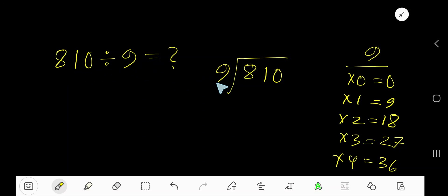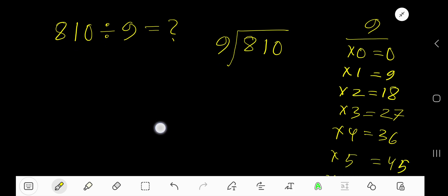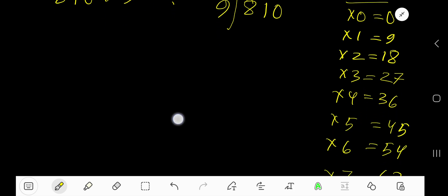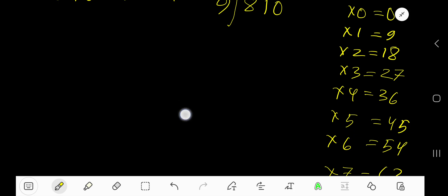810 divided by 9. Here 9 is a divisor, so we need the multiplication table of 9. 9 times 0 is 0, 9 times 1 is 9, 9 times 2 is 18, 9 times 3 is 27, 9 times 4 is 36, 9 times 5 is 45.